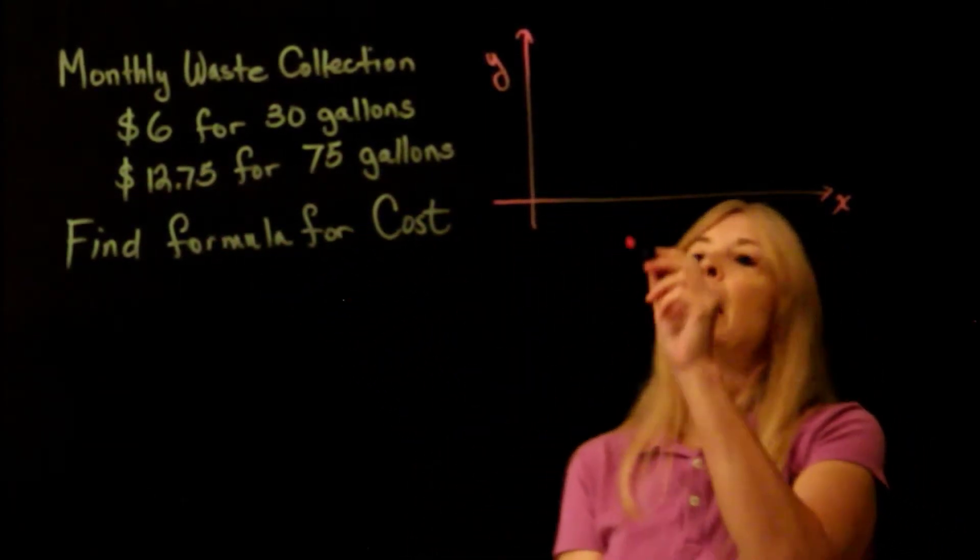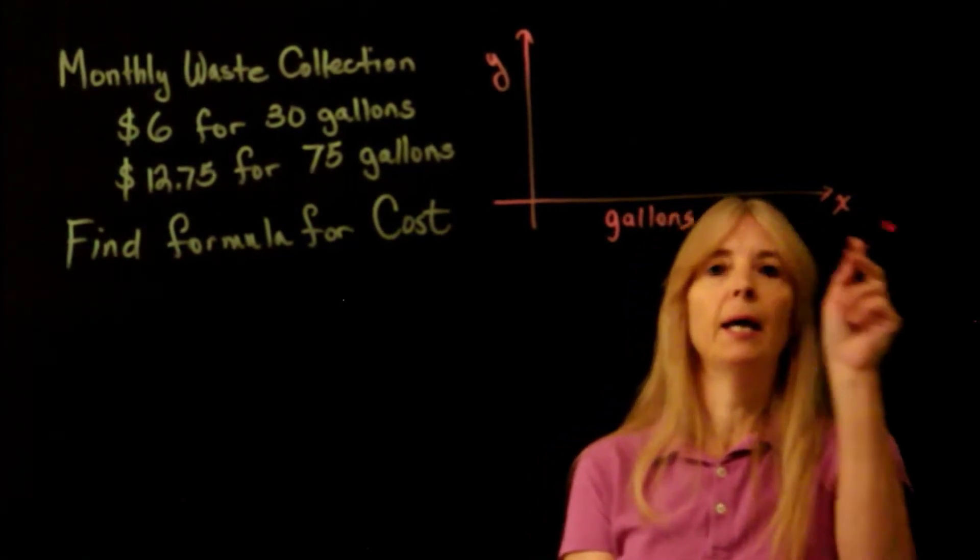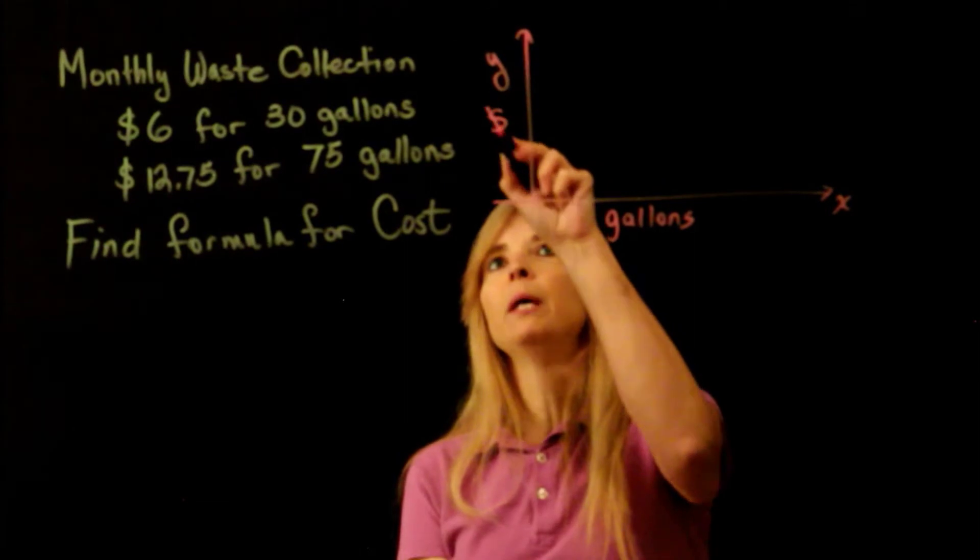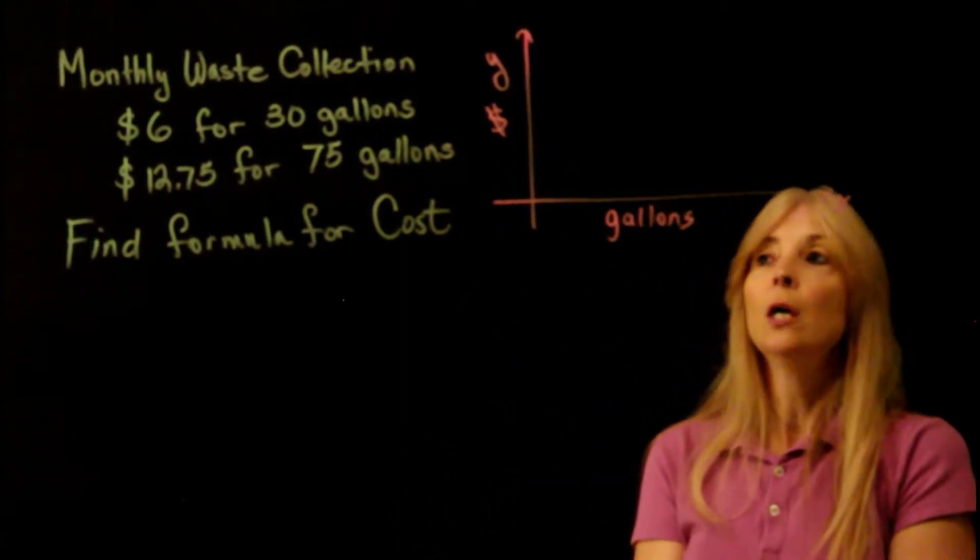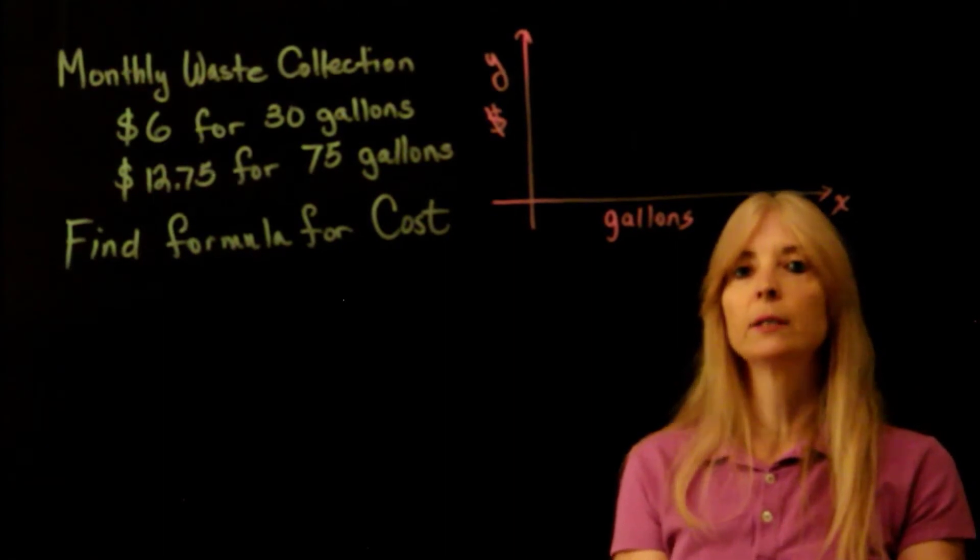And so this would be my gallons, my x, and my y then would be my costs, my dollars. So that makes it so I can understand what my x and y is.